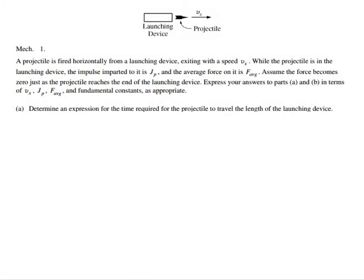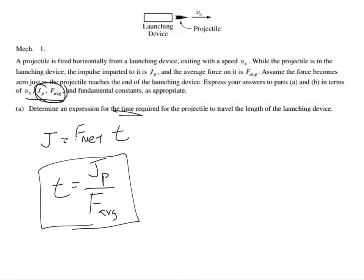All right, this is a pretty straightforward question. They want us to come up with an equation for the time for the projectile to go along the length of this launching device. If you look at the given information, they tell us basically all this stuff, and the thing that comes to mind is this: when I'm thinking about time, I want to use the impulse. I remember that impulse is equal to force F_net times t.